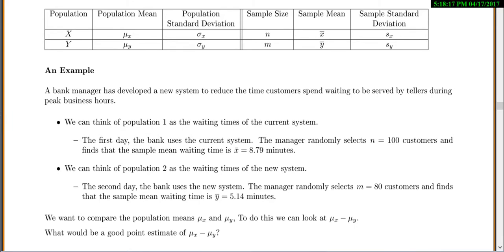For example, suppose a bank manager has a new system to reduce customer waiting time. Population 1 is waiting times on the current system. The first day, the bank uses the current system and the manager randomly selects 100 customers, finding a sample mean waiting time of 8.79 minutes. Population 2 is waiting times of the new system. The second day, using the new system, the manager randomly selects 80 customers and finds a sample mean of 5.14.